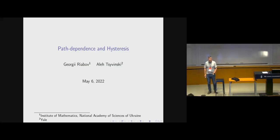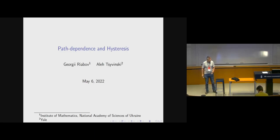Today I'm delighted to introduce Oleg Zivinsky, Distinguished Macroeconomist. As you may know, Oleg is working in many different areas — mostly perhaps in public finance and macro — but he's been working on many different things: networks, information, learning, financial markets, environment. And he's going to tell us about path dependence and histories.